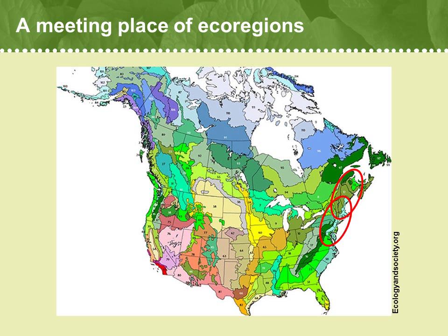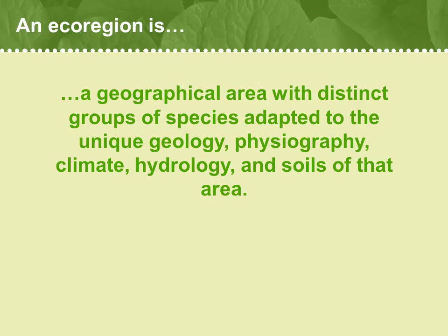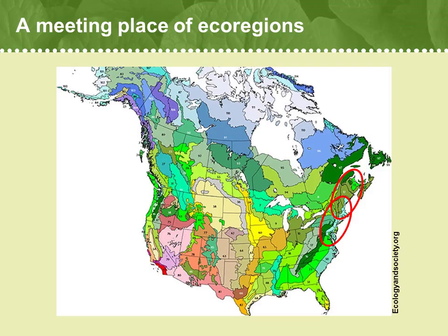What is an ecoregion exactly? Ecologists tend to define an ecoregion as a geographical area that has distinct groups of plant and animal species adapted to the unique geology, physiography — meaning elevational gradients — the climate, the hydrology (that is the water systems), and the soils of that area. The entire world has been divided into particular areas that share these characteristics and host quite predictable suites of plant and animal species. New England has several different ecoregions within its borders, including cold northern ecoregions and warmer southern ecoregions.